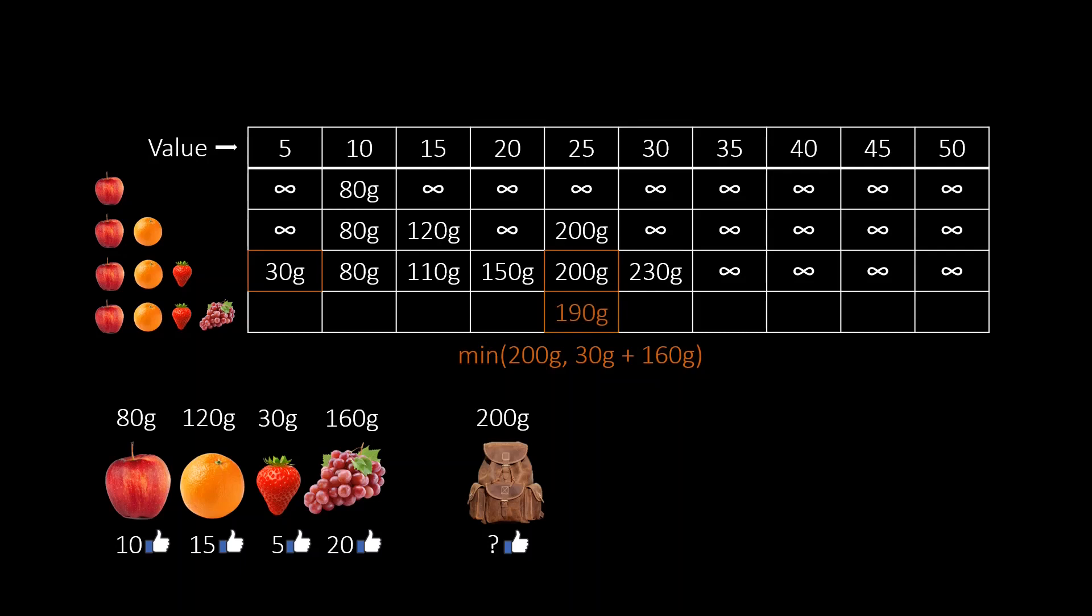Note that the computation we just did only requires a constant number of steps. In particular, it does not depend on the number of fruits. So the runtime of this algorithm is linear in the size of the table. In our example, we had a small table since all values of the fruits are multiples of 5.